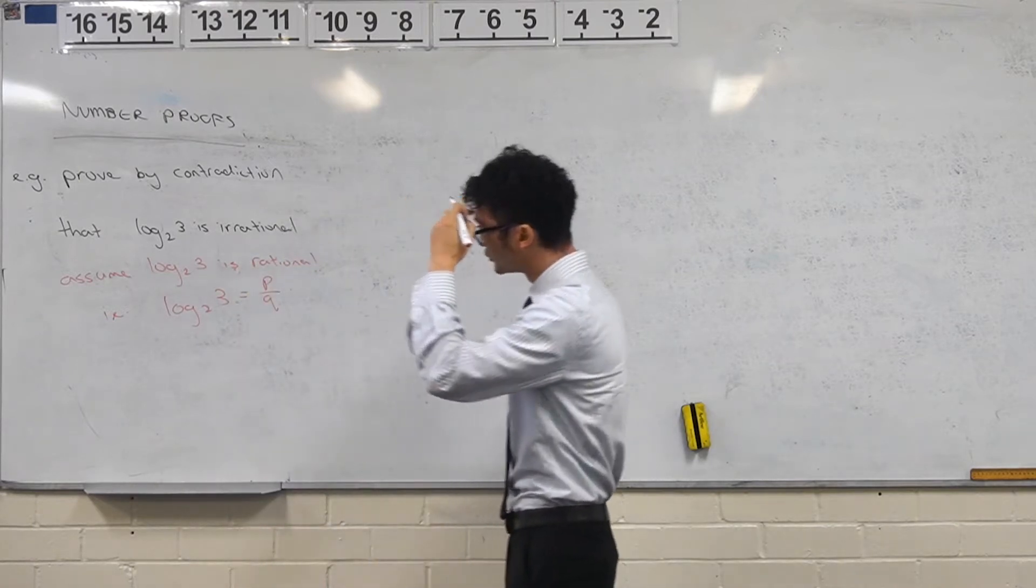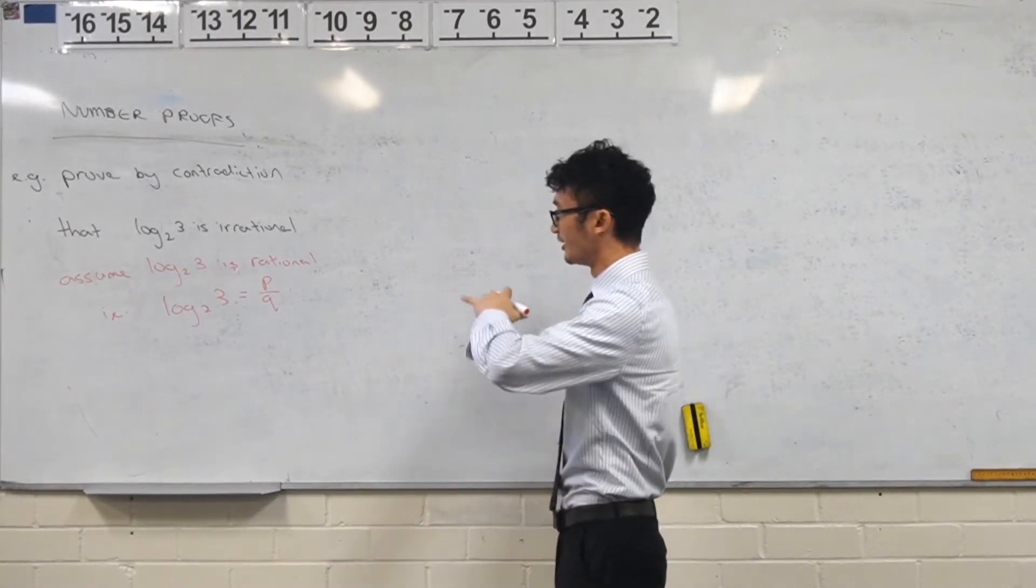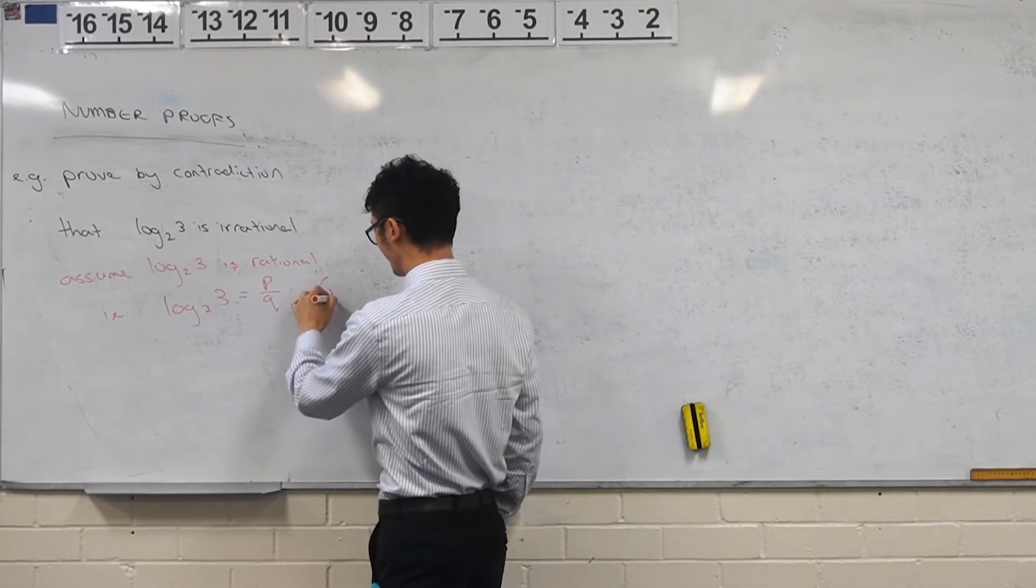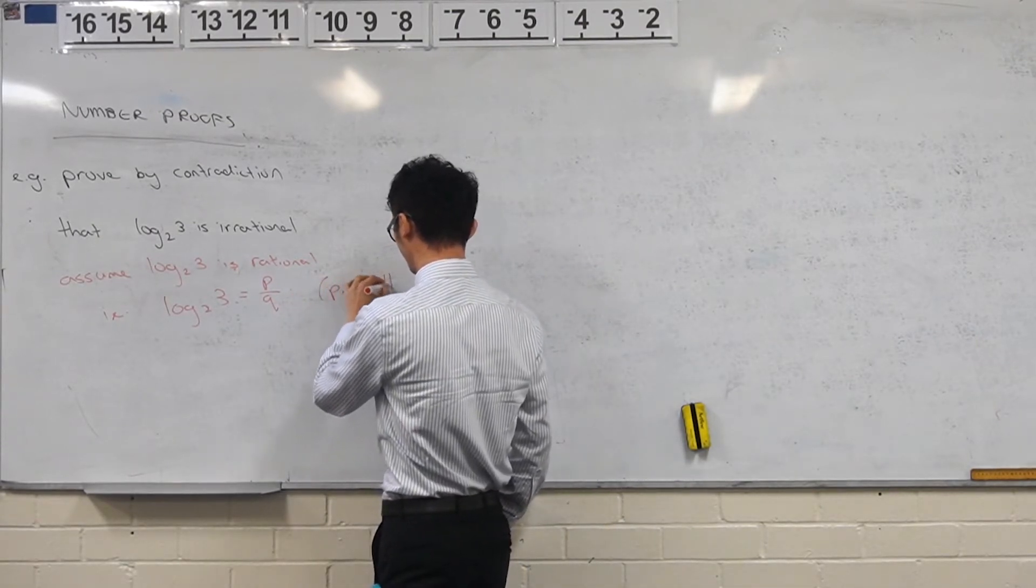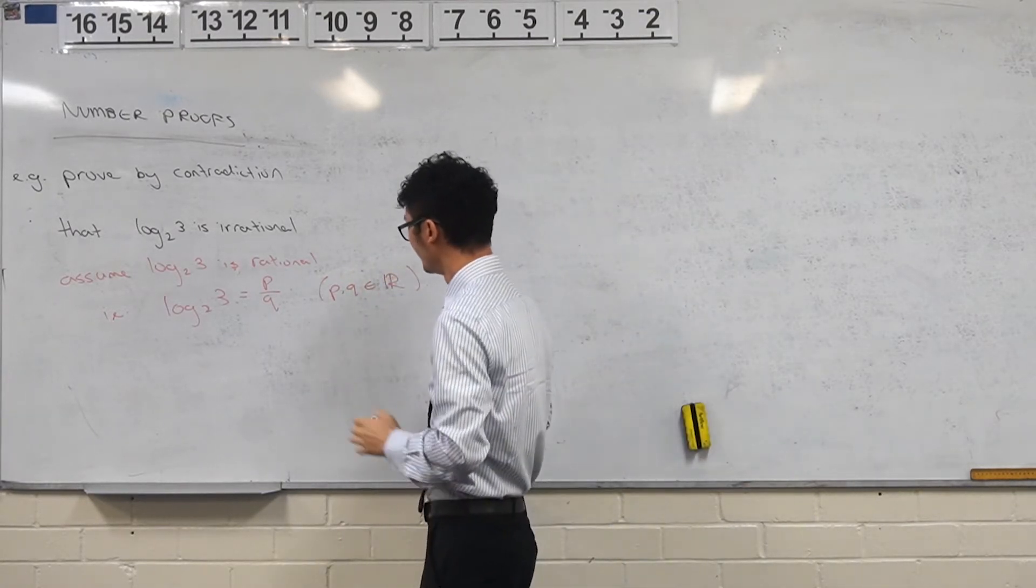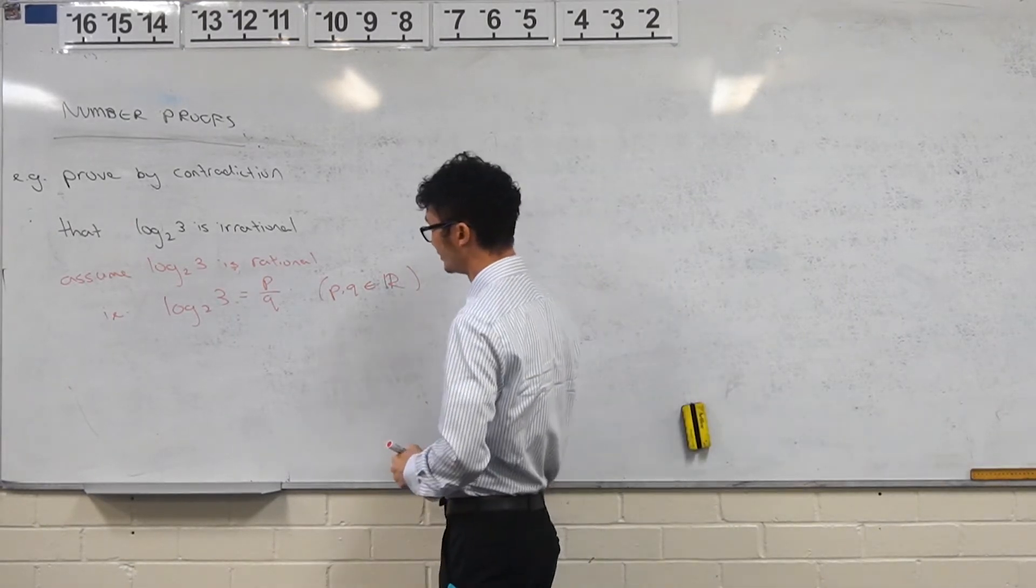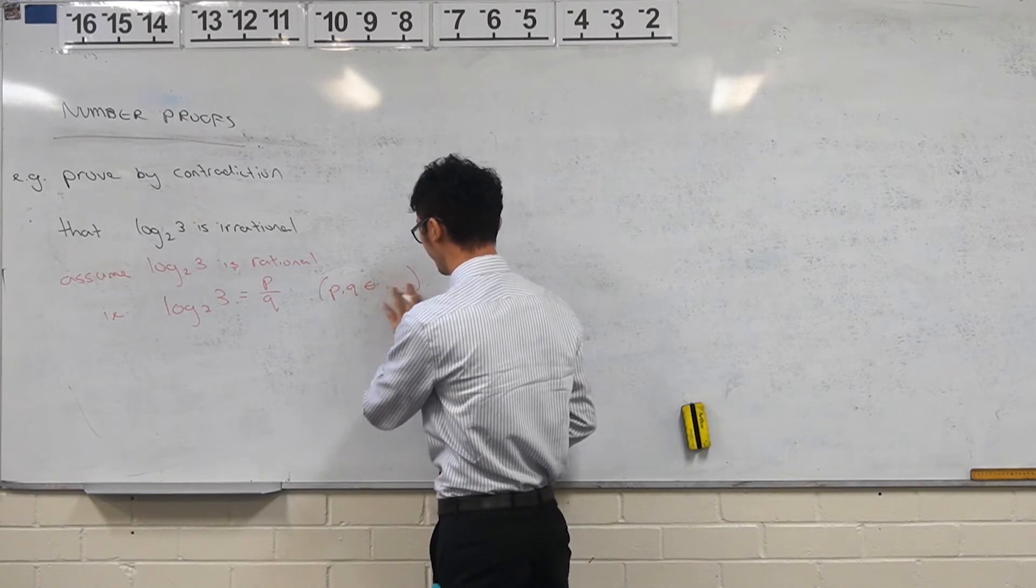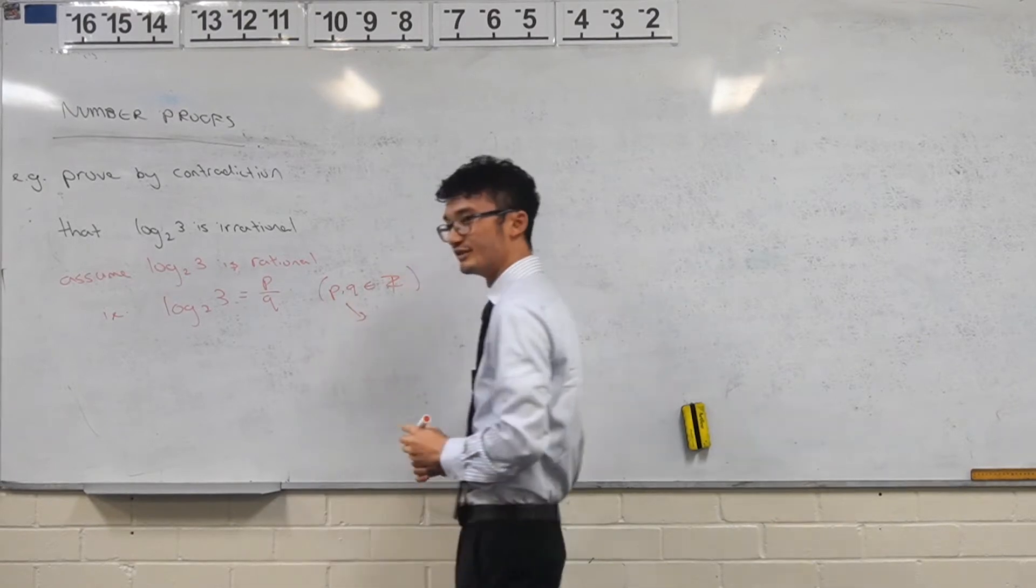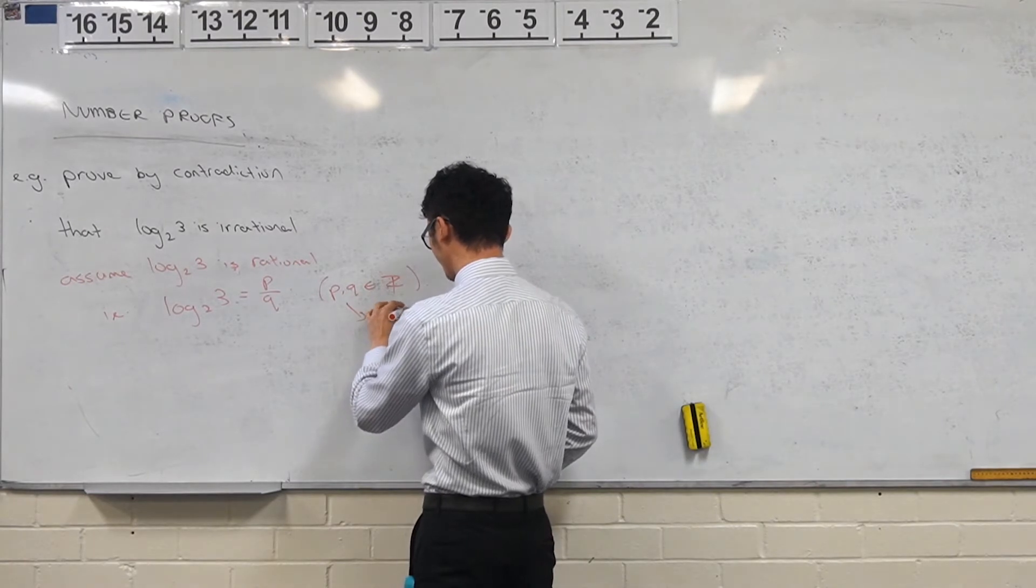And now we have restrictions on p and q here, right? Because if you think about your logarithmic graph, there's particular values which we can take. So I'm trying to think if p and q can be negative. Wait, integers are not negative? Sorry, they should be integers. Yeah. Integers and remember the other condition that p and q have to have. Right. So coprime or highest factor is 1.